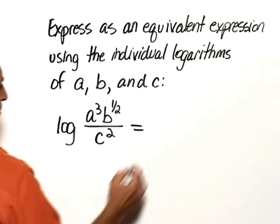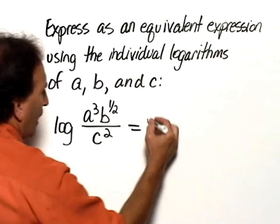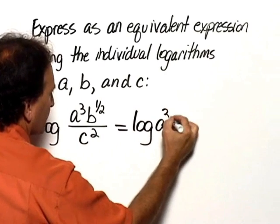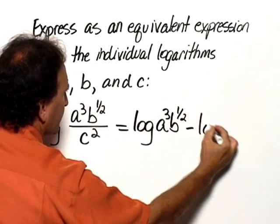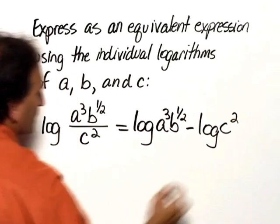Let's begin by using the rule for the log of a quotient, which is that you take the log of the numerator minus the log of the denominator. So this is the log of A cubed B to the one-half minus the log of C squared.